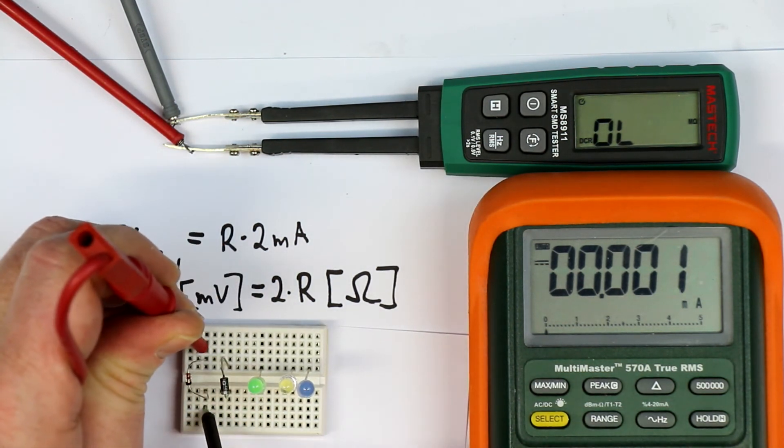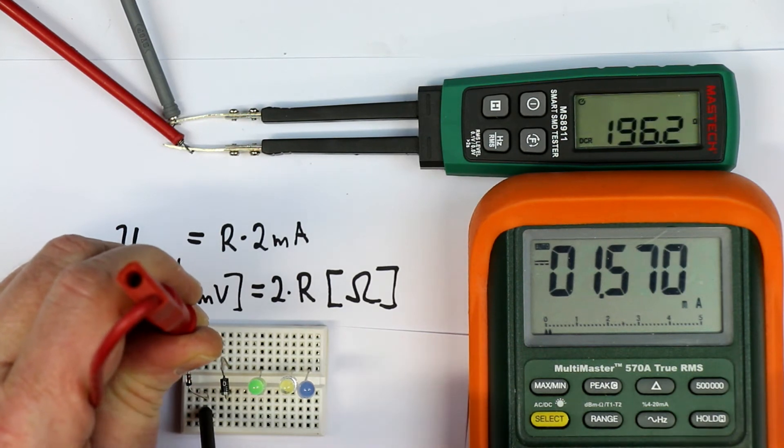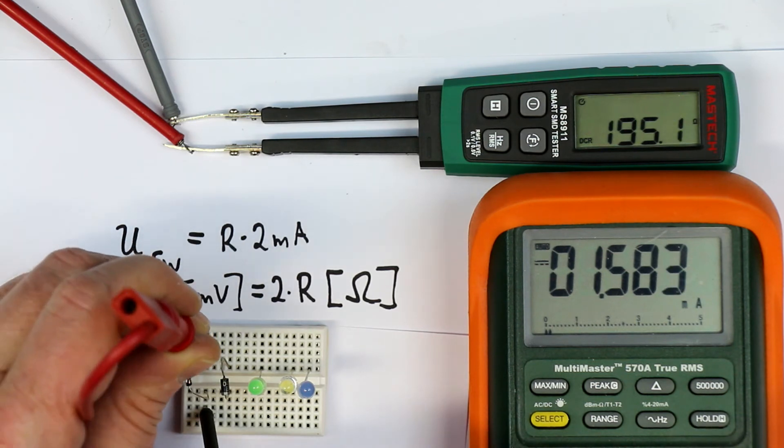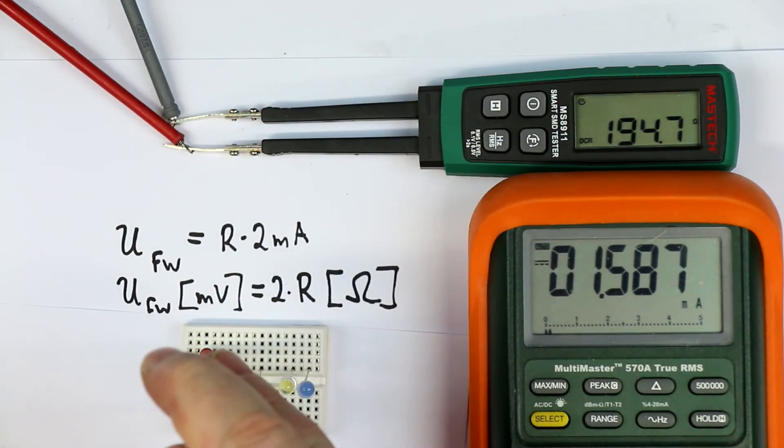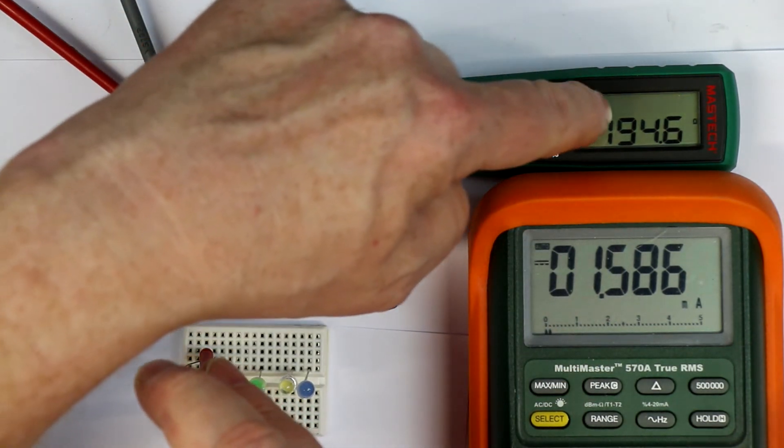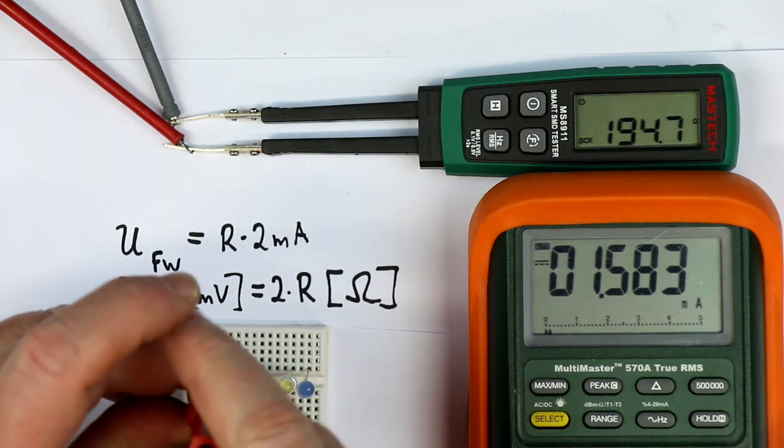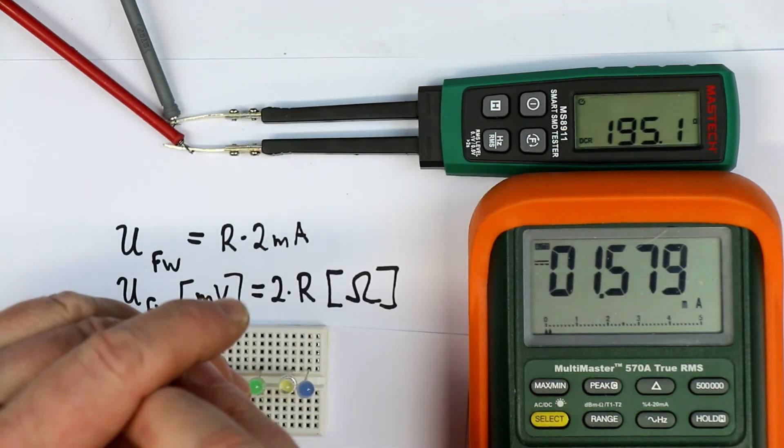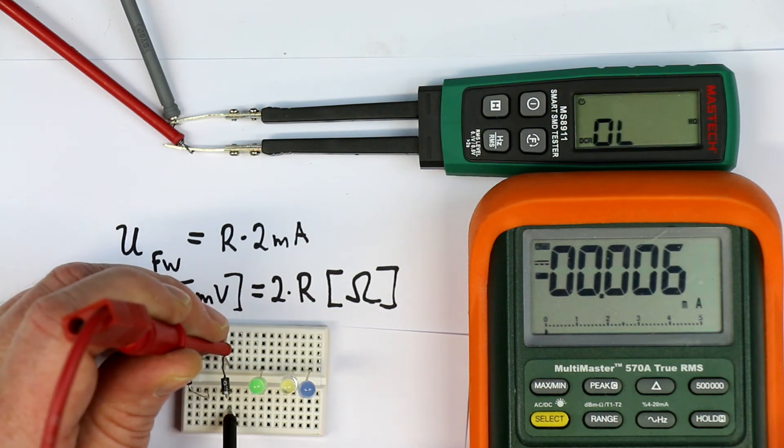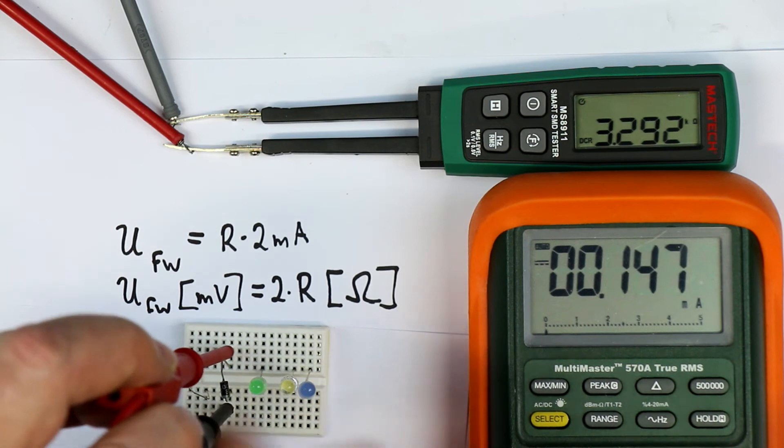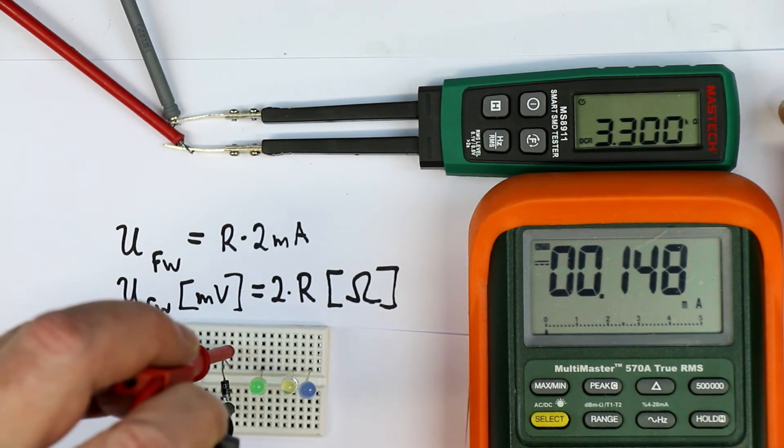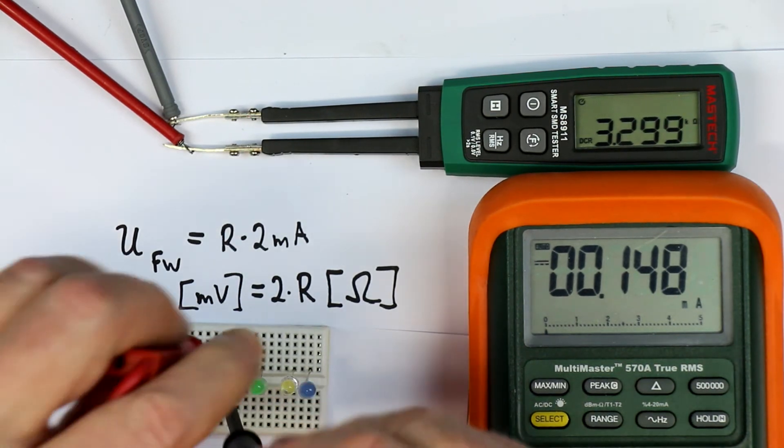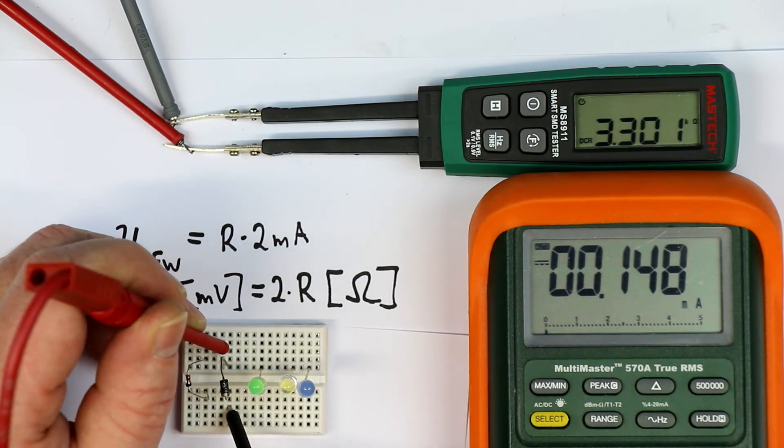But anyway, Schottky diodes measure reasonably well with a DC resistance of 200 ohms. Or in other words, if we take into account the 1.6 milliamps and we multiply this 200 ohms with 1.6, we in fact get 300 millivolts. So taking into account the different currents, this is even correct. But a silicon diode is really the maximum we can measure with 3.3 kilo ohms. And so at least with a little bit of guessing, we can identify working and non-working diodes.